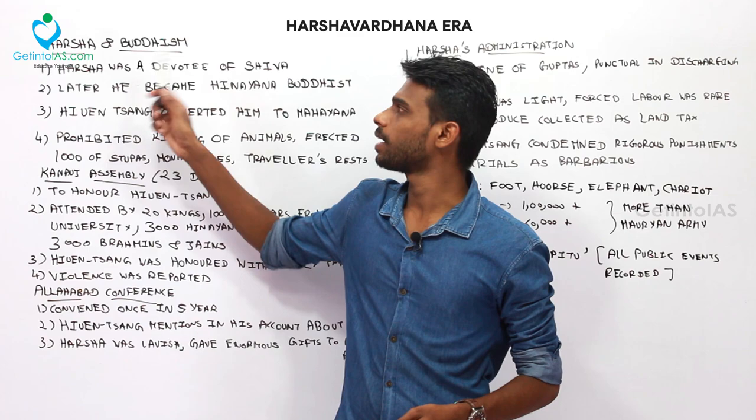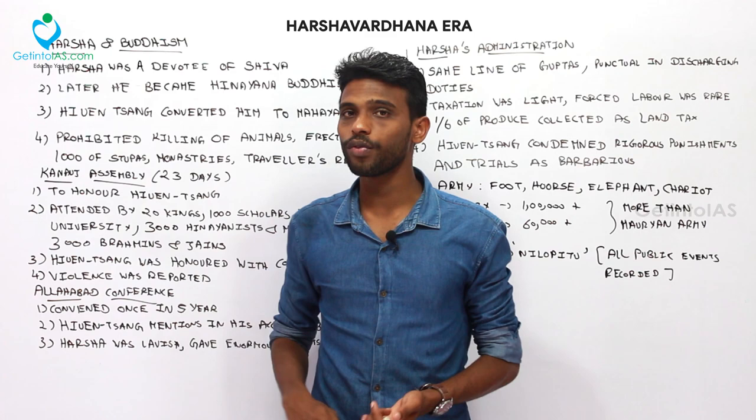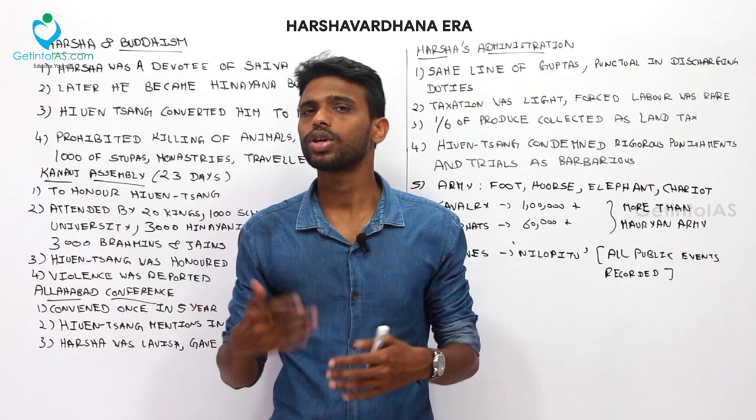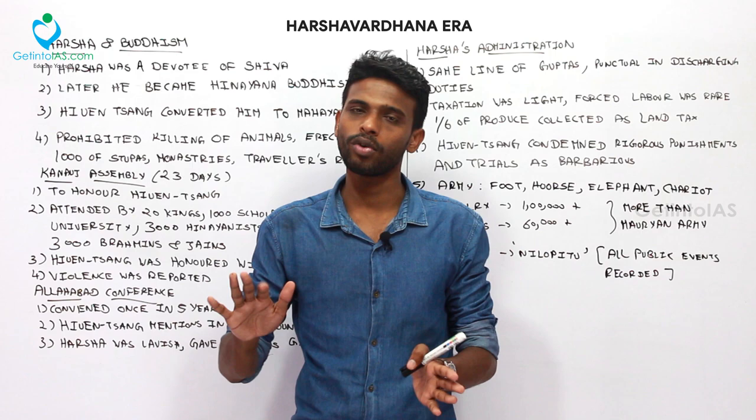The main source for details about Harsha and Buddhism is Xuanzang's accounts. According to those accounts, Harsha was initially a devotee of Lord Shiva. But later he became a Hinayana Buddhist, and after Xuanzang's arrival he was converted to Mahayana Buddhism. Xuanzang changed Harsha from Hinayana to Mahayana Buddhism.